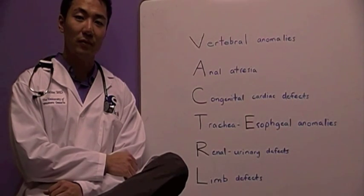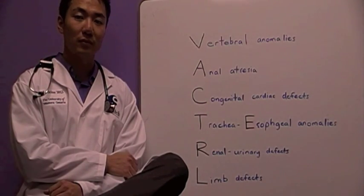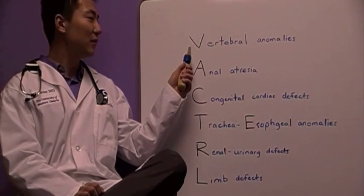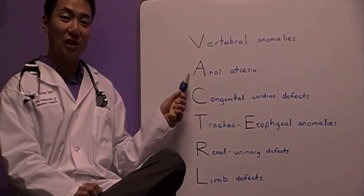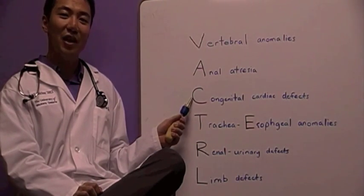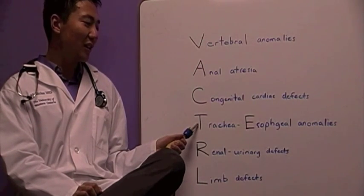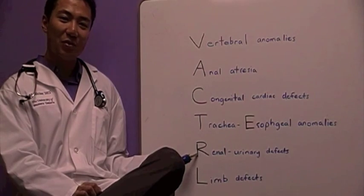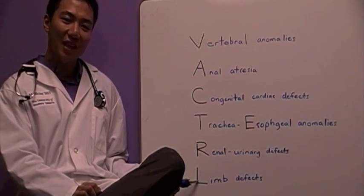It is important to check for other associated congenital anomalies, known as VACTERL. 55% of VACTERL babies are born with the imperforate anus. V: Vertebral anomalies. A: Anal atresia. C: Congenital cardiac defects. T: Tracheoesophageal anomalies. R: Renal and urinary defects. L: Limb defects.